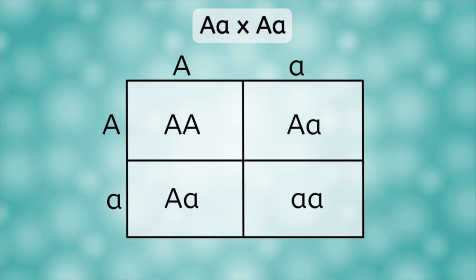Remember that for heterozygous genotypes like big A, little a, it is conventional to always list the big letter first, regardless of which parent it came from.